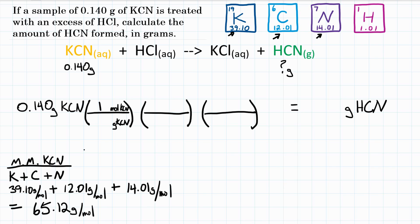Now, that value we're going to use in our first conversion. We have one mole on top, and we're going to put the 65.12 grams on the bottom, because we want grams of KCN to cancel with grams of KCN on top and bottom. Now we're at moles of KCN.